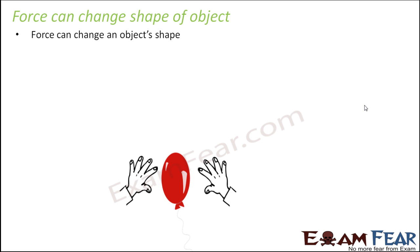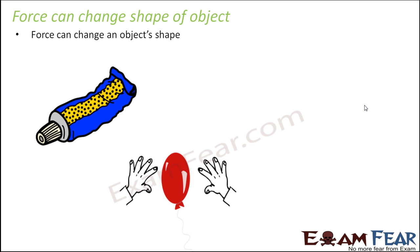This shows that force application can bring about a change in the shape of an object. Just think of your toothpaste tube — whenever you press the tube, toothpaste comes out. But at the same time, the shape of the tube also keeps changing. As more and more paste comes out, the tube's shape changes further. This is due to the force applied when you squeeze it.